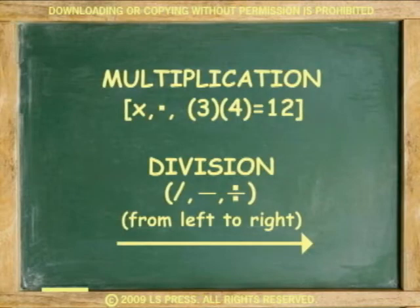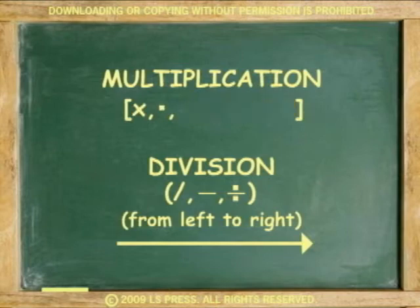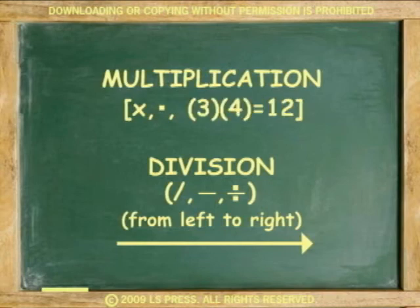Then, do multiplication and division from left to right as they occur. Multiplication is identified with an x, dot, or parentheses, like in 3 times 4 equals 12. Division is identified with a slash, fraction line, or division sign.